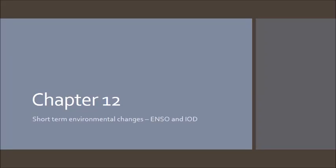Today we're going to begin our focus on short-term environmental change, specifically the ENSO and the IOD. I'll explain what those are in a moment. It's all related to Australia's climate and the differences in climate patterns from year to year.